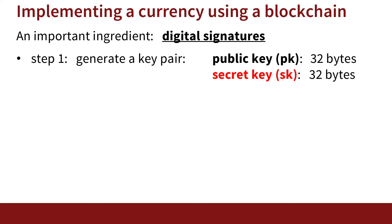To implement a cryptocurrency using a blockchain, we need to understand an important ingredient called a digital signature. A digital signature is made up of three steps. The first step is generating a key pair: a public key and a secret key. Both are very short — only 32 bytes. The public key is published to the whole world, and the secret key is kept secret so that only the person who needs to sign messages knows it.